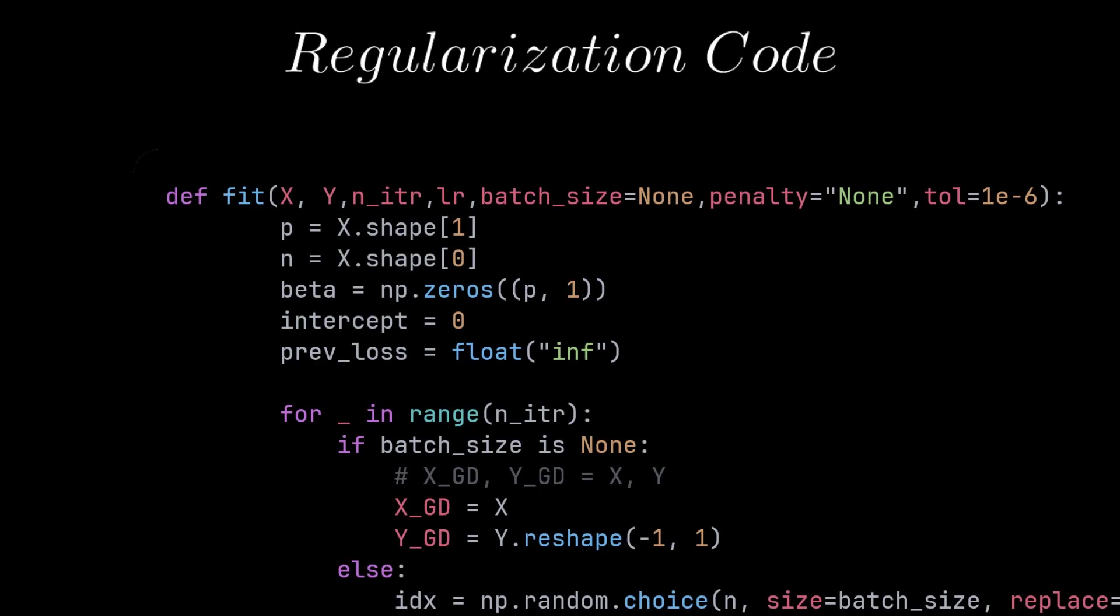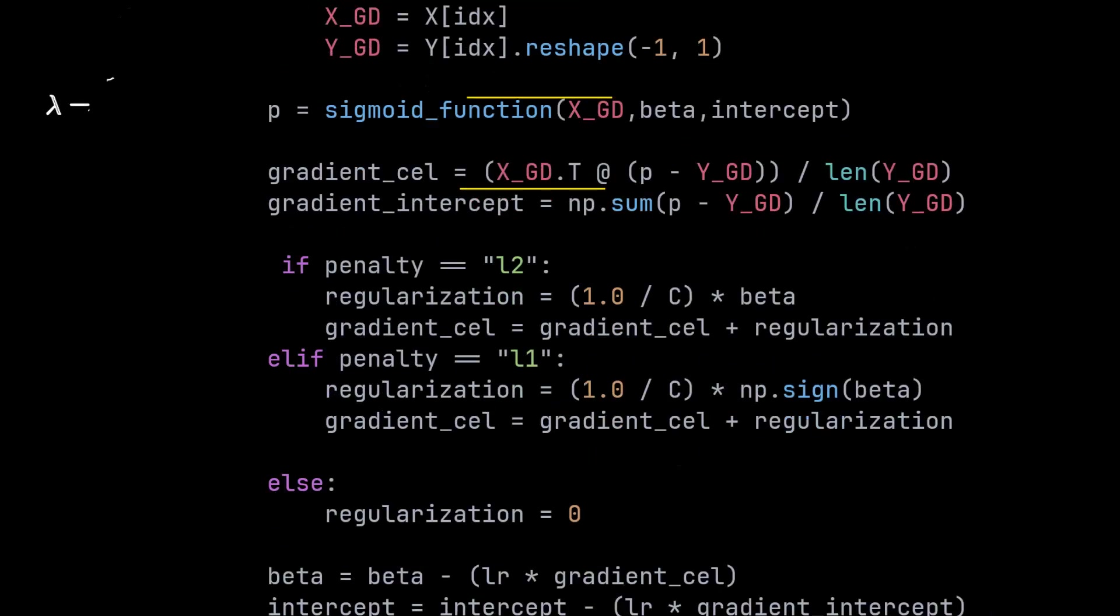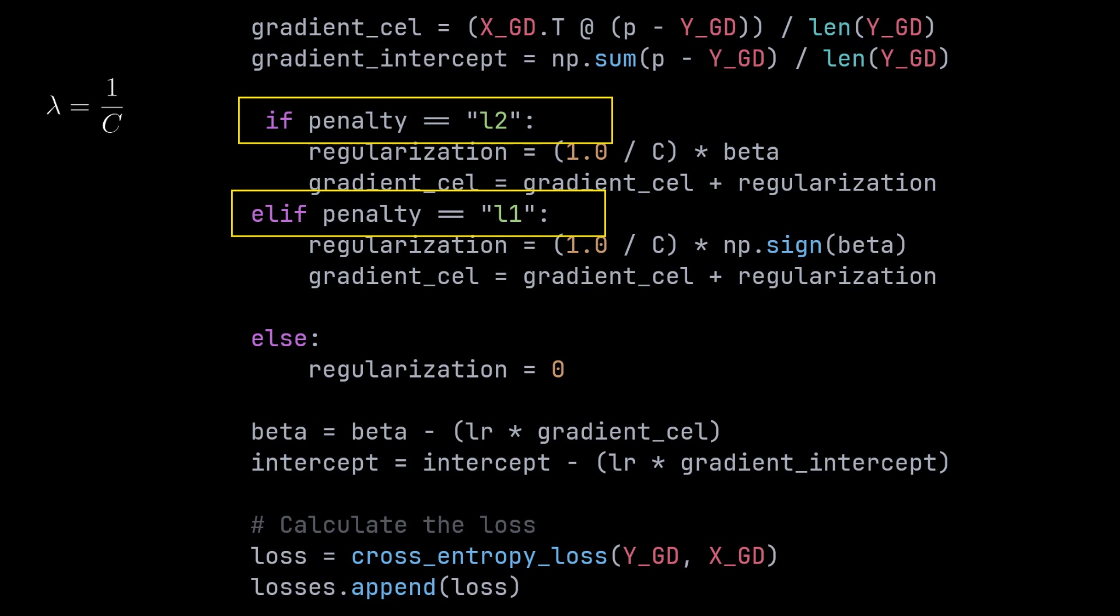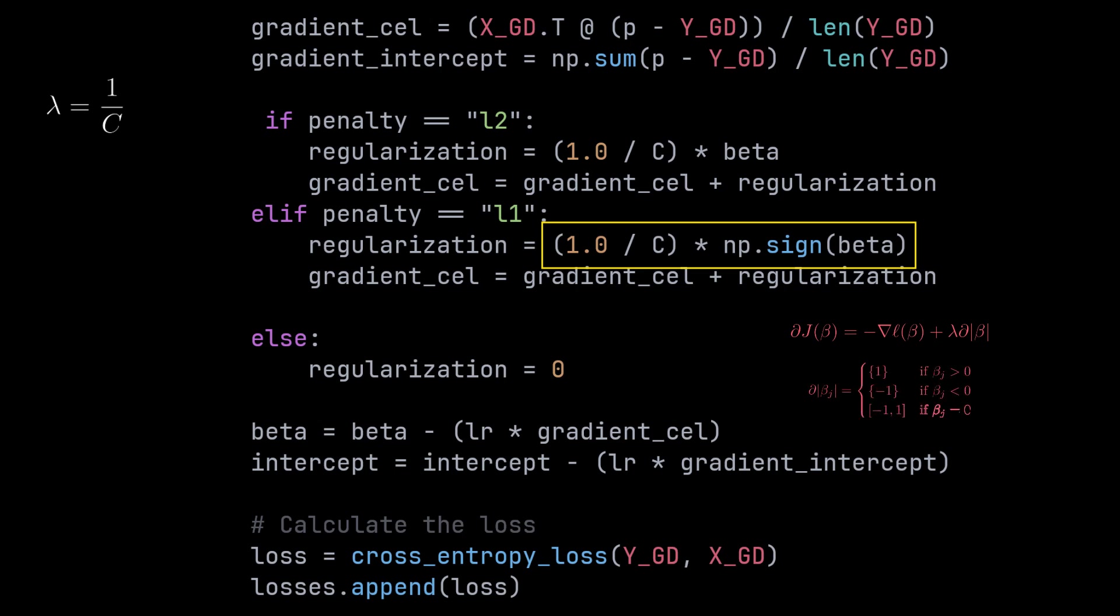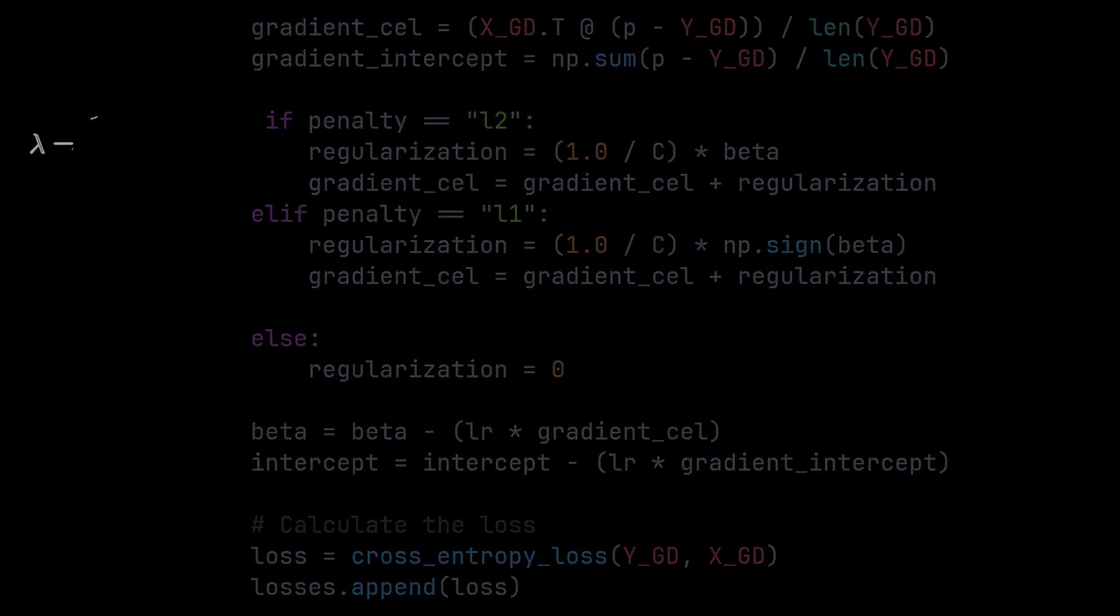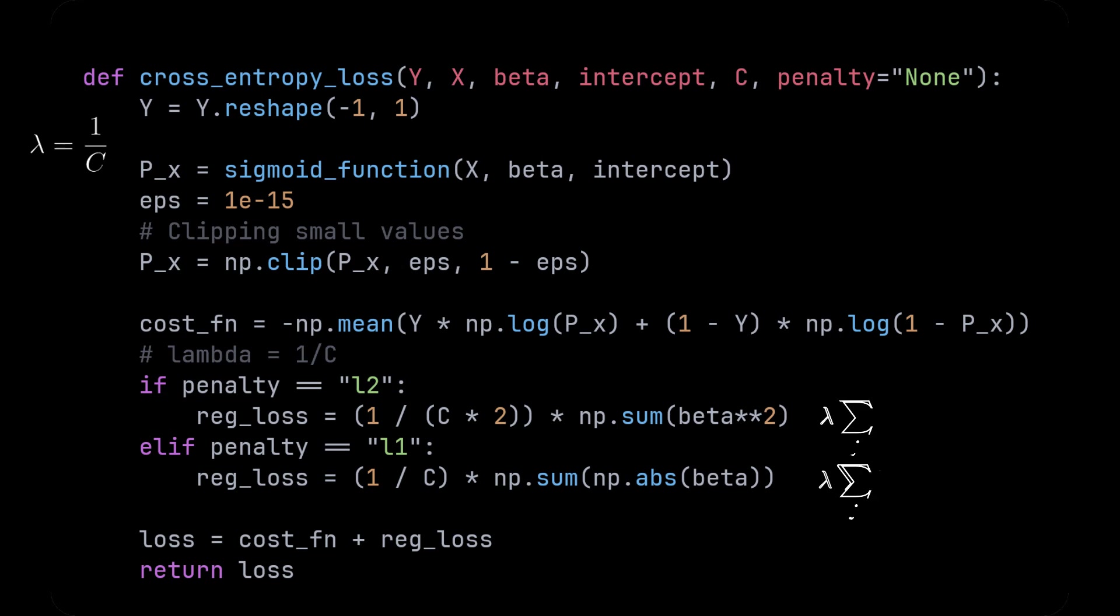So we modify the fit function and check if the penalty is set to L1 or L2 and calculate the gradient of it using the formula shown earlier. And for the L1 case, we can simply take the sign of the coefficients times lambda. Under the cross-entropy loss, we can simply use the cost function related to each one of them to calculate the loss related to each regularization.